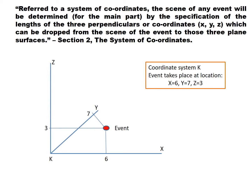So in this example, if we measure the distances from the x, y and z axes in units of meters, we can say that the event took place at a point equal to six meters on the x-axis, and equal to seven meters on the y-axis, and equal to three meters on the z-axis.